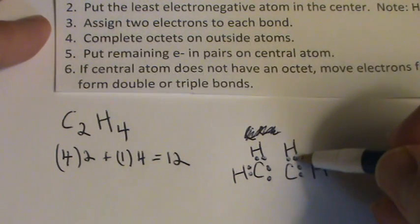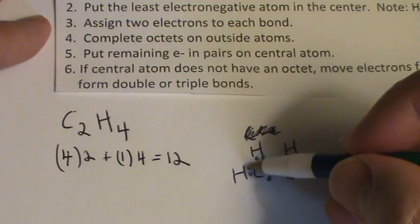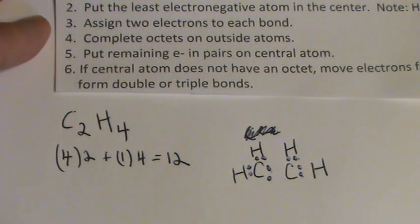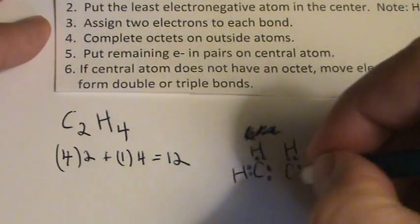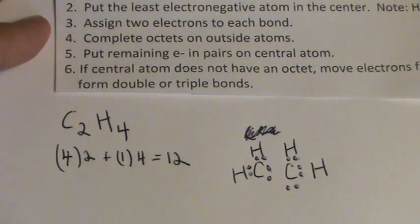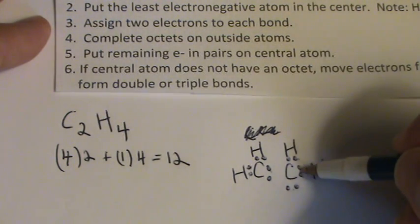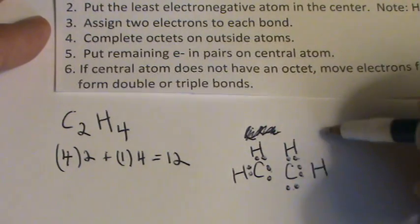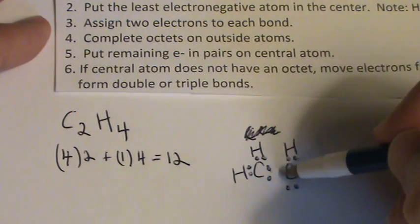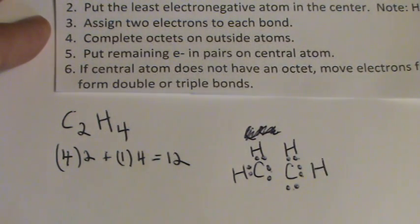So I've used 2, 4, 6, 8, 10. I've got 2 more, so I'll put those out here. But my problem is that now I've got 2, 4, 6, 8 for that one, but this carbon only has 6. So I can't, with those 12 electrons, satisfy the octet.